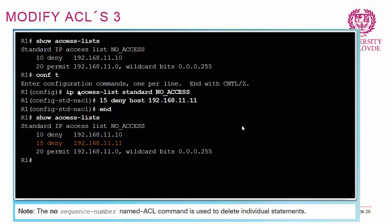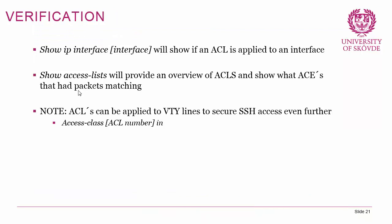You can also insert a new entry between existing ones by specifying an intermediate sequence number. For example, if entries 10 and 20 exist and you want something in between, you can add '15 [new rule]' and it will be inserted between them. For verification, use 'show ip interface [interface]' to see if an ACL is applied, and 'show access-lists' to see all ACLs and their match counts. ACLs can also be applied to VTY lines with 'access-class [ACL] in' to secure SSH access.